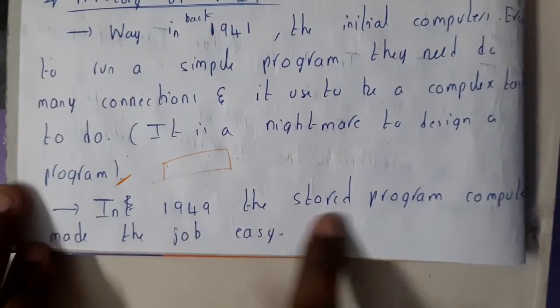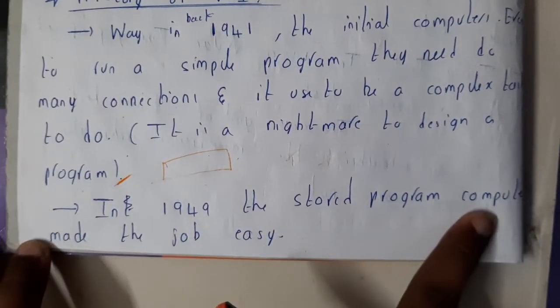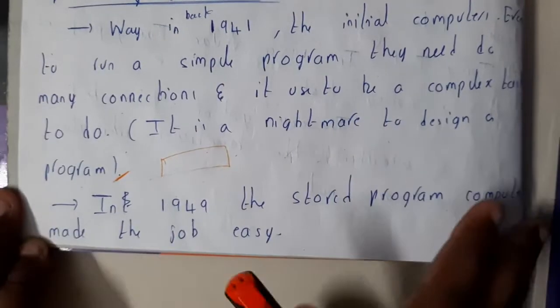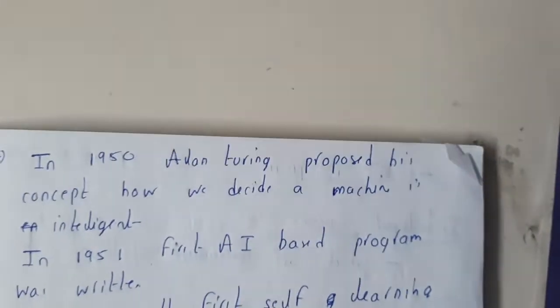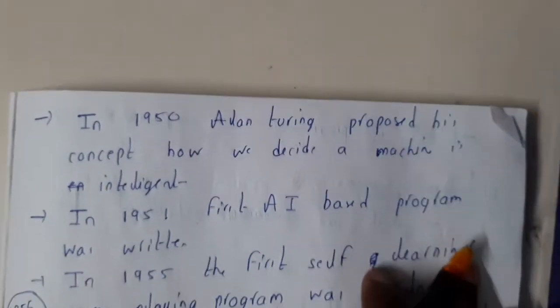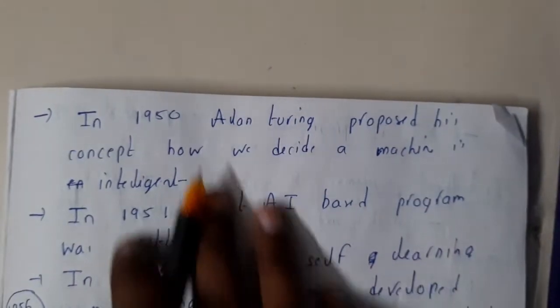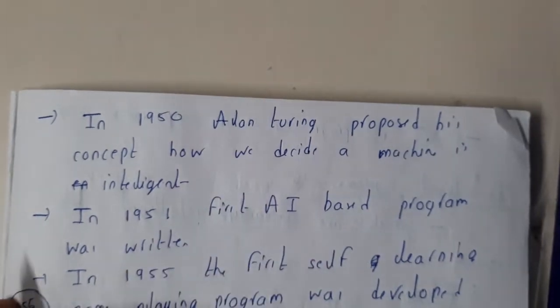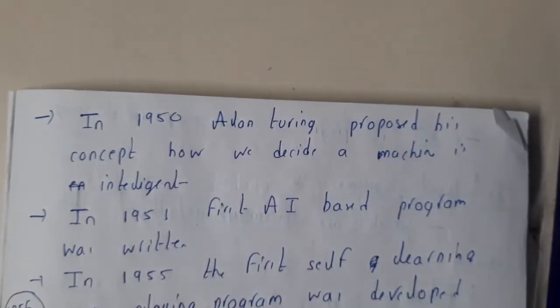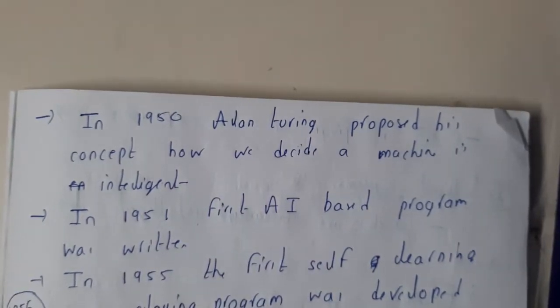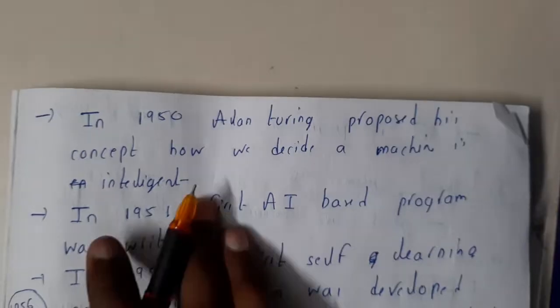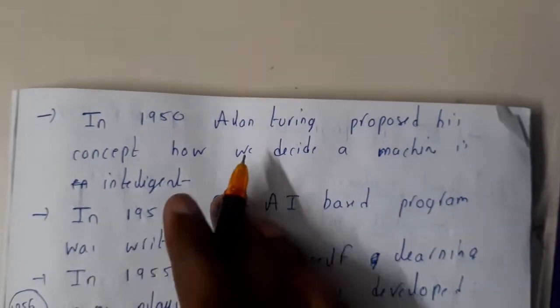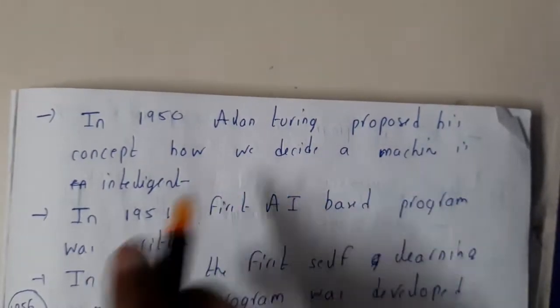In 1950, we discussed Alan Turing and his Turing Test. He proposed it in 1950 — a concept to decide how we can determine whether a machine is intelligent.